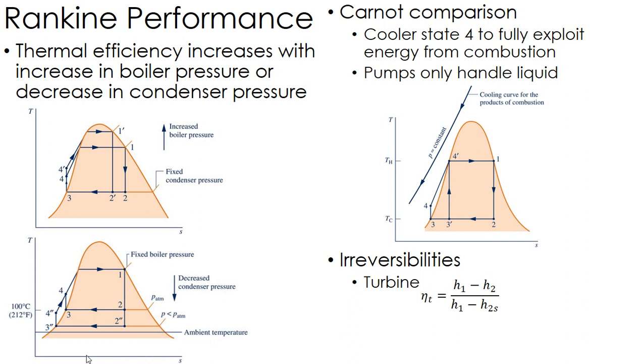Now again, we could have some irreversibilities; keep those in mind. In the previous slide, we were talking about the ideal situation. Here I have a turbine; it could have an isentropic efficiency.